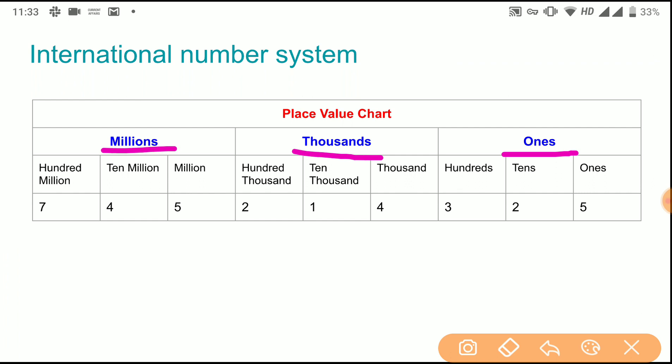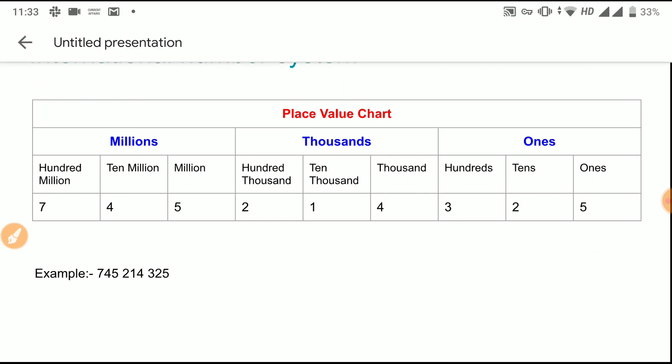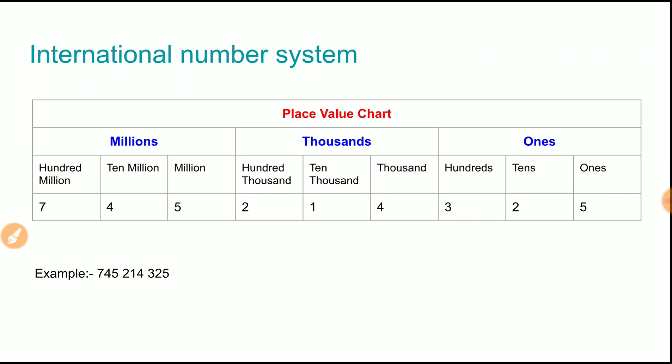So how do we write the number in the periods? As you can see the example 745214325, that's how we have to write the numbers.